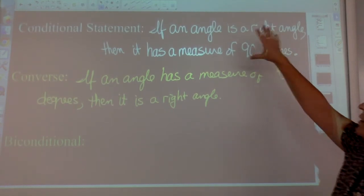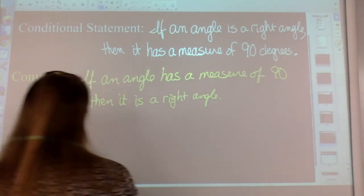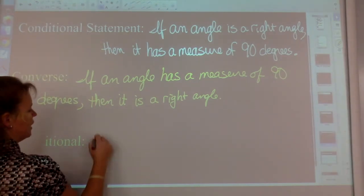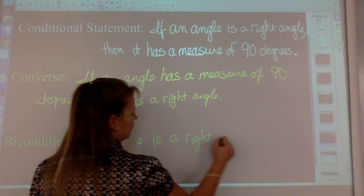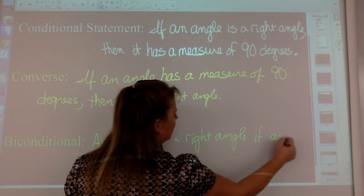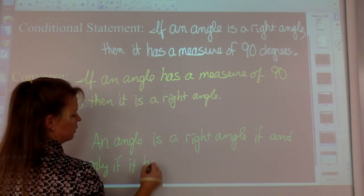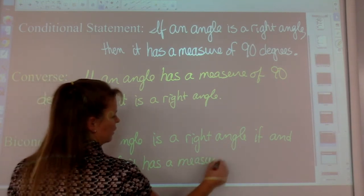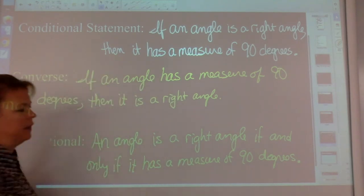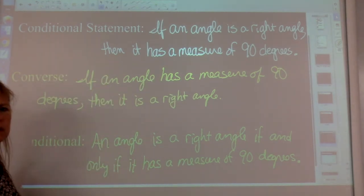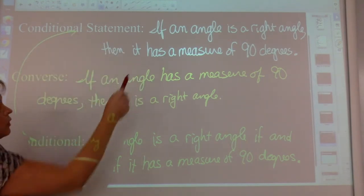So we are able to write a biconditional, and the biconditional must go in order of the conditional statement. An angle is a right angle if and only if it has a measure of 90 degrees. No punctuation other than the period at the end. An angle is a right angle if and only if it has a measure of 90 degrees — the order matches the conditional statement, the hypothesis comes first, and it is true.